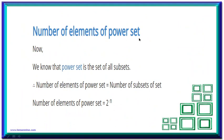The number of elements of the power set equals the number of subsets of that set. So the number of elements of the power set is also 2 raised to the power n. If someone asks for the total number of elements of the power set, we apply the same formula 2^n.